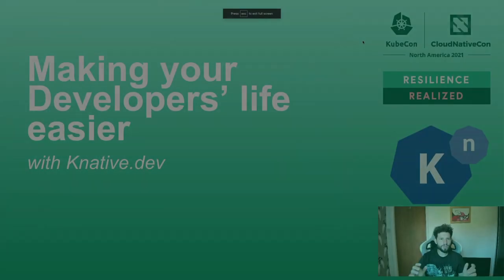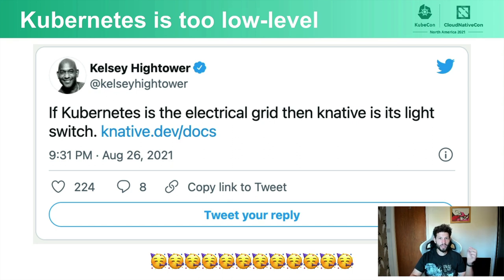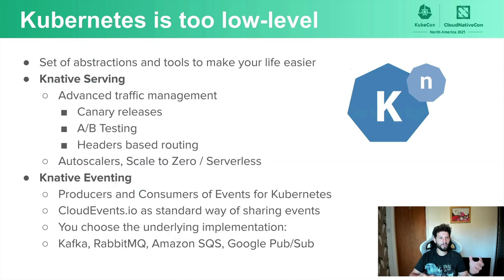Let's talk about making developers' lives easier with Knative. It's a difficult project to explain, but Kelsey put it well: 'If Kubernetes is the electrical grid, then Knative is the light switch.' Knative comes in two components you can use independently: Knative Serving, which provides advanced traffic management and auto-scaling, and Knative Eventing, which brings the concepts of producers and consumers of events to Kubernetes.